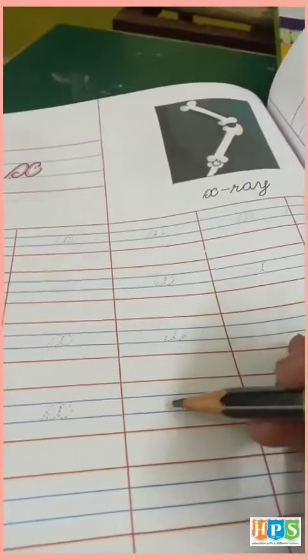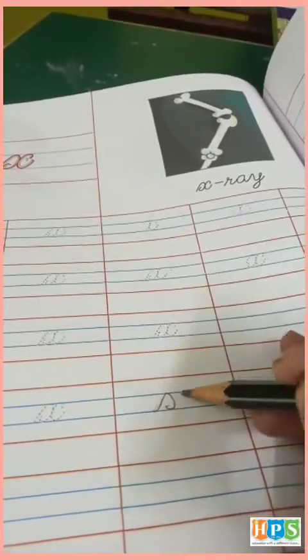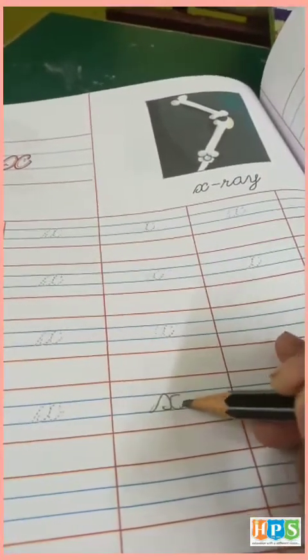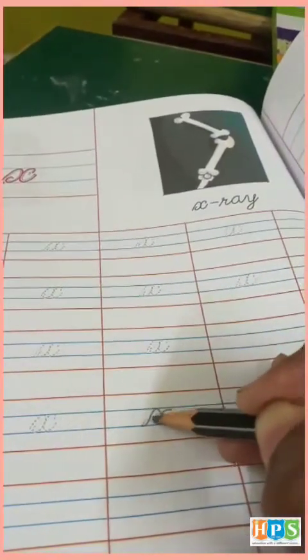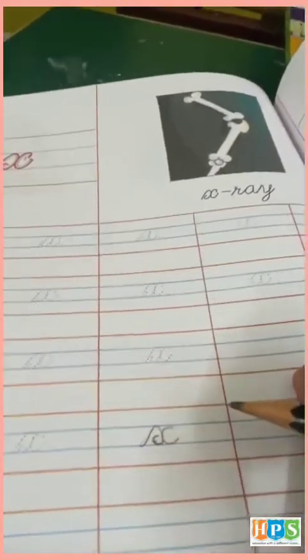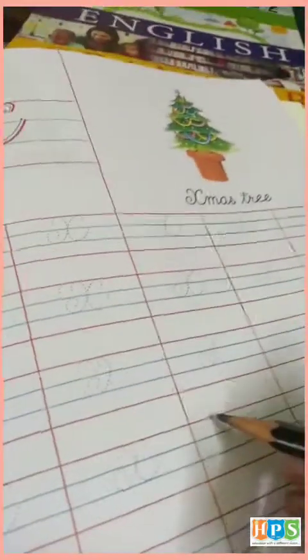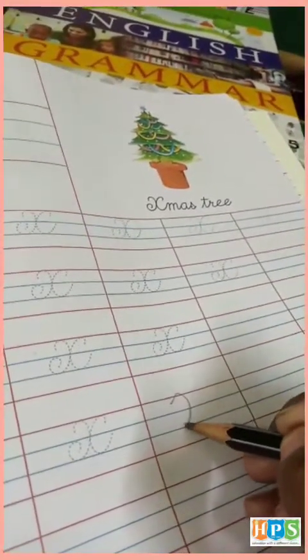X, small x — isko khuda se round andar kar leke. Capital bhi aise banega, first line se banega.